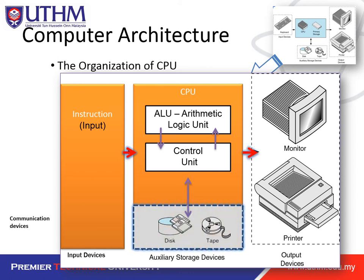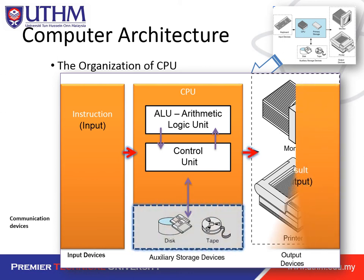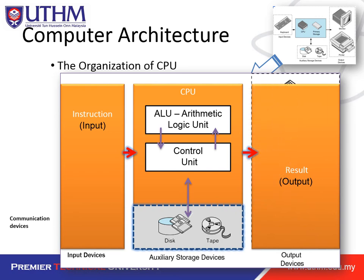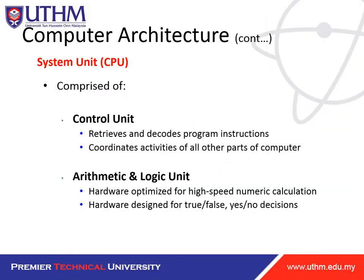There is also the disk and tape — hard disk, pen drive — and the output which gives you the result. The CPU is comprised of the control unit, which retrieves and decodes program instructions and coordinates the activities of all other parts of the computer, and the arithmetic and logic unit — hardware optimized for high-speed numeric calculations and hardware designed for true/false, yes/no decisions.